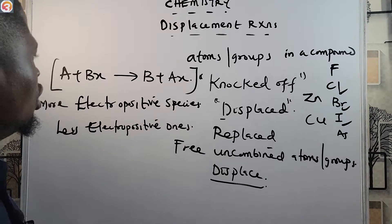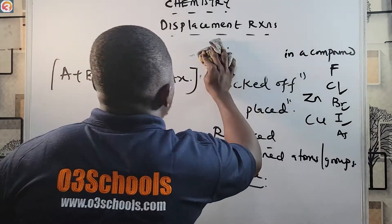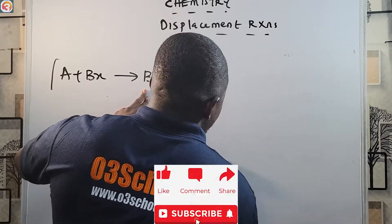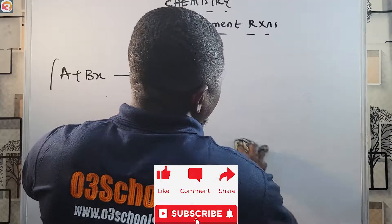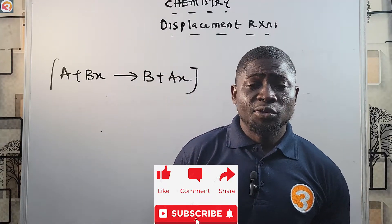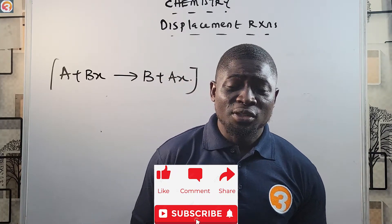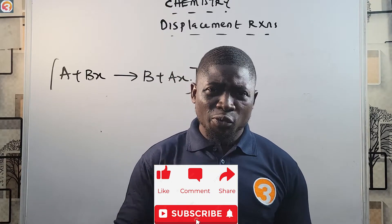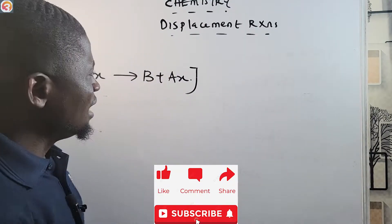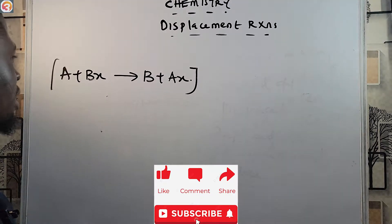Let's see an example of a displacement reaction. The general form is: A + BX → B + AX. If you have not liked this video, please do so now so other students can find it. If you have not subscribed to this channel, please subscribe — it is free. Click the notification bell below this video and share this video with your friends and class group.